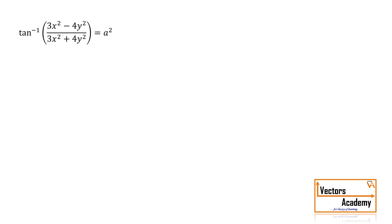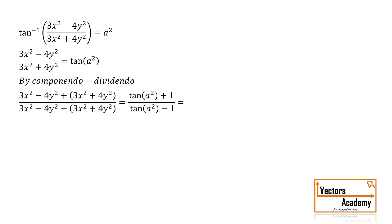Now let's look at a similar question. We have: tan inverse of 3x squared minus 4y squared upon 3x squared plus 4y squared, equal to a square. The function tan inverse can be taken to the right hand side, giving tan of a square. Again, applying Componendo Dividendo and simplifying, the right hand side remains a constant term.